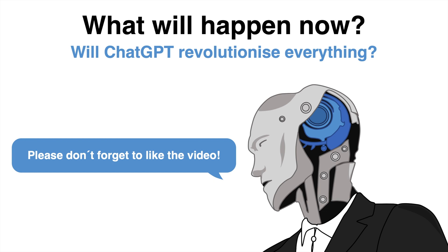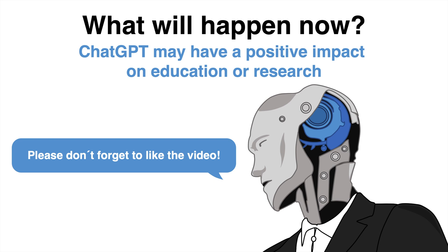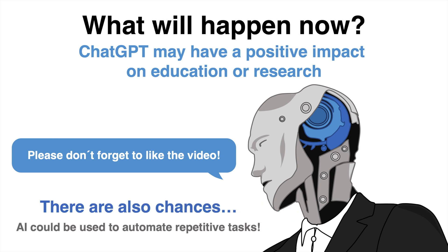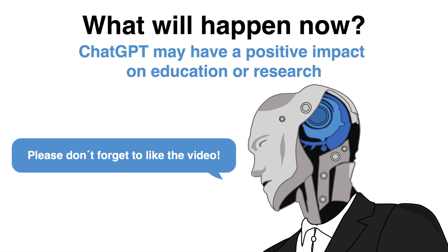That being said, the use of AI in fields such as education, research, and development can also have a positive impact. For instance, ChatGPT can help with automated summarization of long texts, making it easier for students or researchers to quickly understand the main points of a document. AI can also be used in automating repetitive tasks, allowing researchers to focus on more complex and creative work. Overall, it is important to consider the potential implications of using AI in various fields and to use it responsibly, in order to ensure that the benefits outweigh the risks.